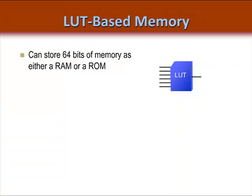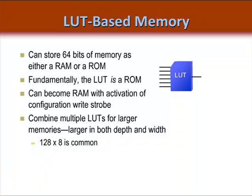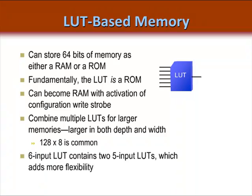LUT-based memory is referred to as distributed RAM or distributed ROM. Since the FPGA uses SRAM technology, the LUT is fundamentally a ROM. By activating the configuration write strobe, we can actually use it as a 64 by 1 RAM. The core generator can combine multiple LUTs for larger memories that are deeper and/or wider. Remember, however, that each device has dedicated block RAM, so this functionality is really only intended for small memories — 128 by 8 memory sizes are very common. Also note that the 6-input LUT architecture has two 5-input LUTs, which adds more flexibility to your design.